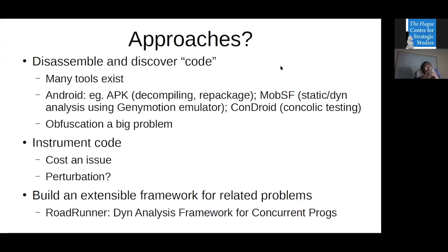People have developed extensible frameworks — both in the hacker world and the research world. For example, in the research world there is something called Roadrunner, which is a dynamic analysis framework for concurrent programs such as Java programs. The problem is extremely substantial, so I'll take one single problem and work on it — I'll just give you some ideas.